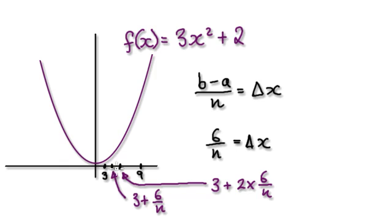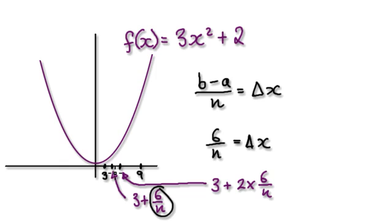So your delta x here is 6 over n. The x-coordinate right here would be 3, which is this number here, plus the gap — the delta x — which is 6 over n. So this triangle here.